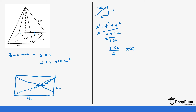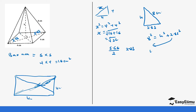So this value here is 2.83 — that is half the diagonal at the center of the base. We have the height at the center, the half-diagonal of 2.83, and the slant height of 8 centimeters. Using the Pythagorean theorem: 8 squared equals height squared plus 2.83 squared. Rearranging: height squared equals 64 minus 2.83 squared. 2.83 squared is approximately 8, so 64 minus 8 gives us 56. Taking the square root of 56 gives us the height as 7.48 centimeters.